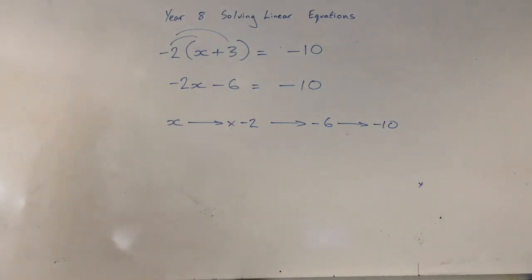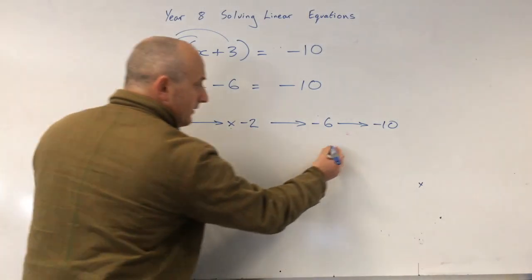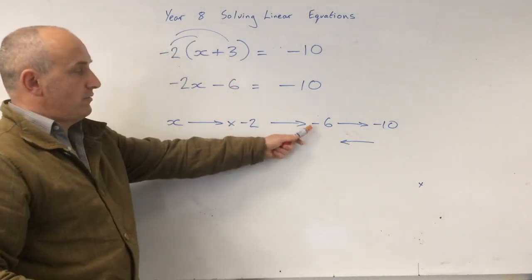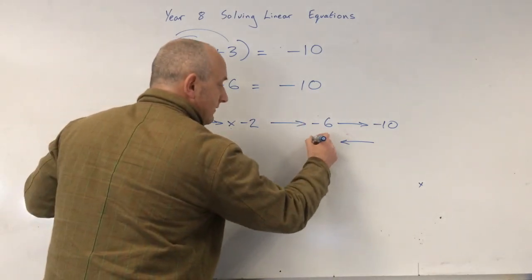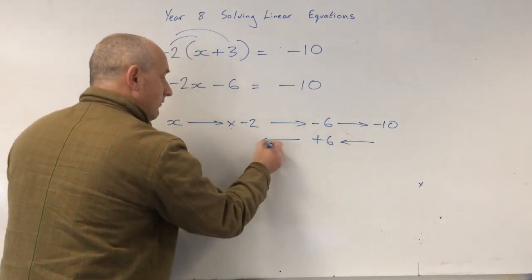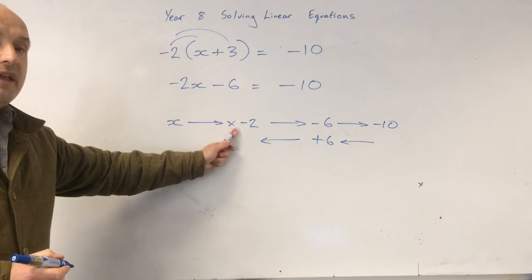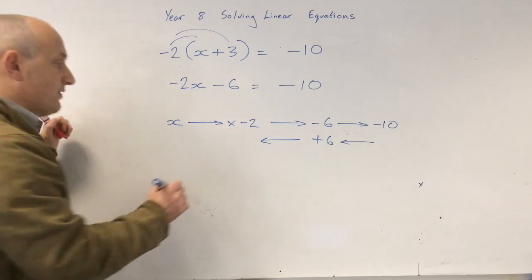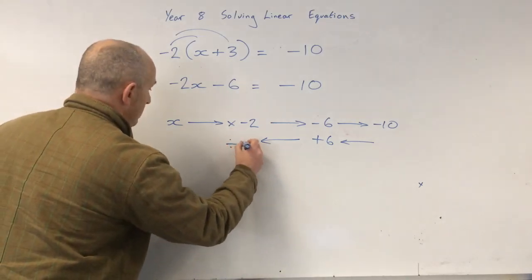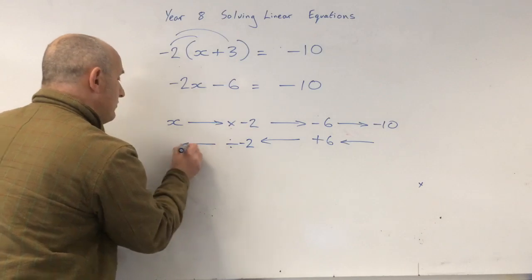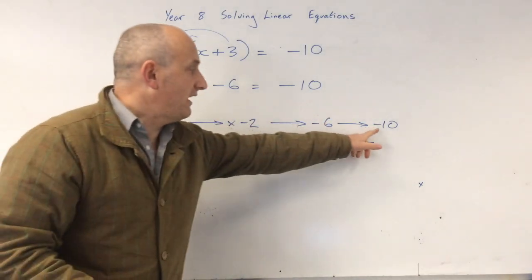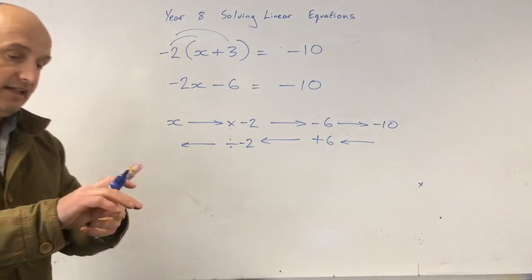So now let's do the inverse. So we add 6. And then we divide by negative 2. Now some of you might need to use your calculators to do this. So negative 10 add 6.